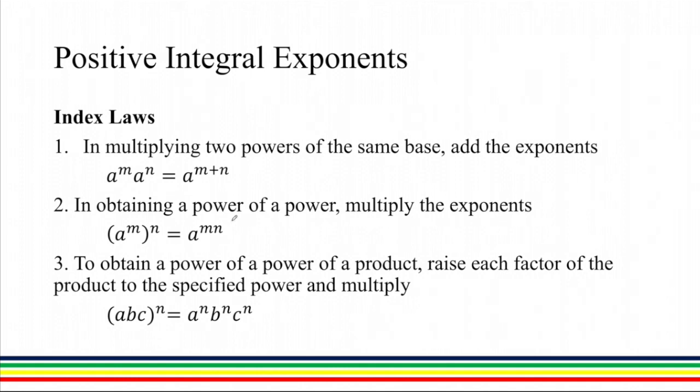To obtain a power of a product, we have to raise each factor of the product to the specified power and then multiply. So we have a times b times c raised to n. We can somewhat distribute the exponent n to all of the terms, as long as it is being multiplied.